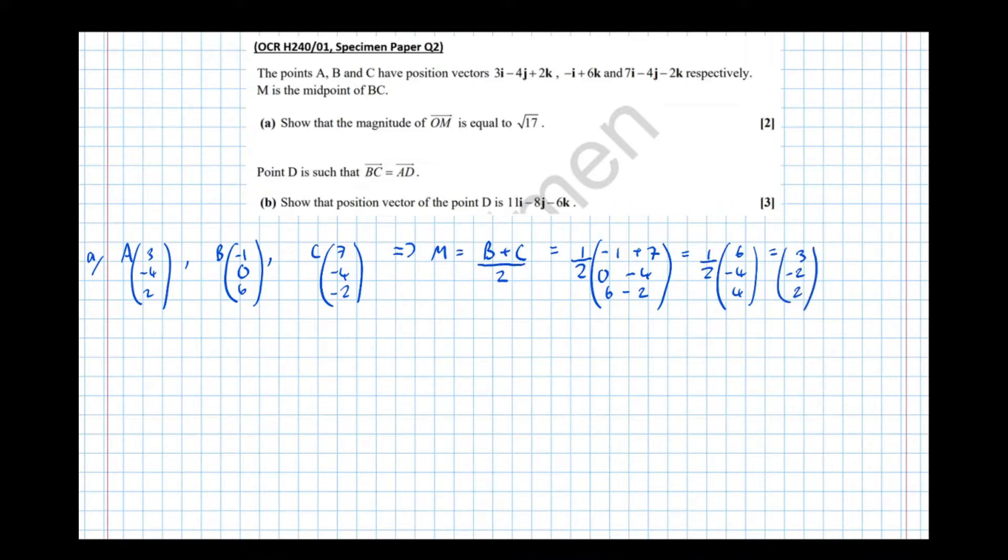And we want to show that the magnitude of that is root 17 so that means that the magnitude, the length of that vector, the length of OM is equal to 3 squared plus 2 squared. Notice I don't write minus 2 squared. I know that squaring something makes it positive anyway. So no need to write the minus sign, plus 2 squared equals root of 9 plus 4 plus 4 equals root of 17.